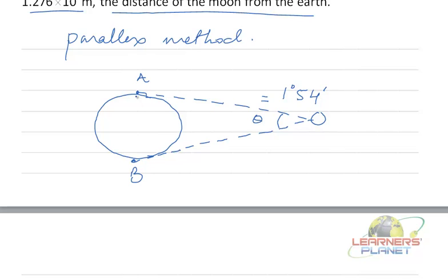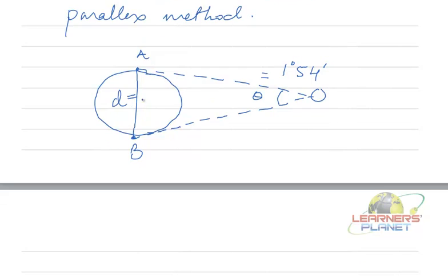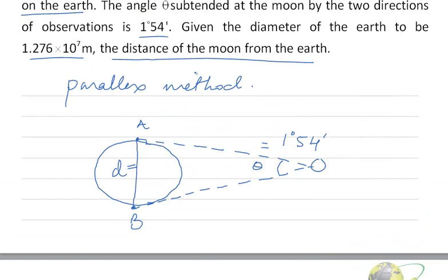And this distance small d, which is also the diameter of earth, is given as 1.276 × 10^7 meters.